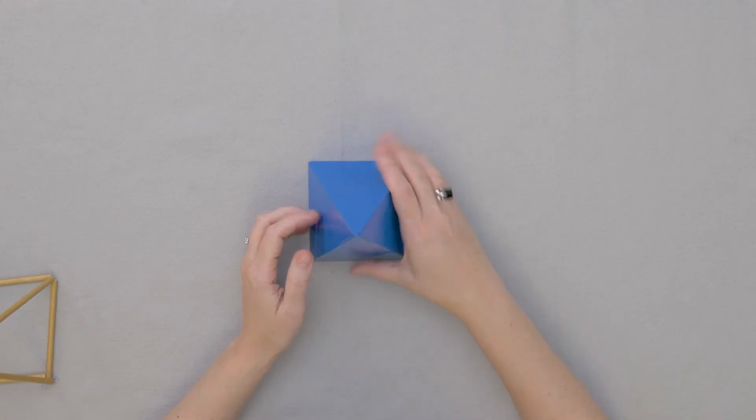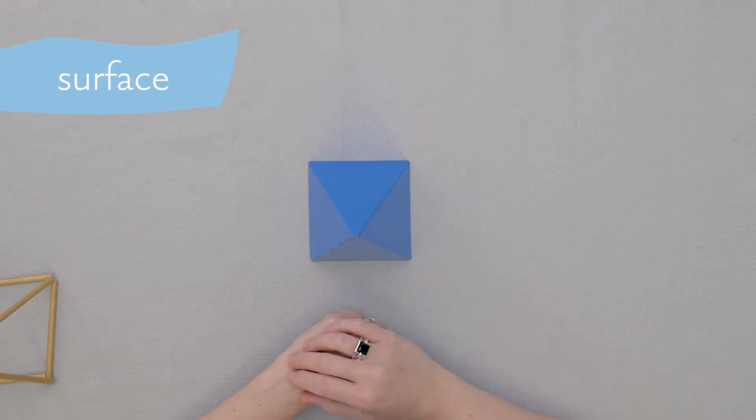Today we're going to talk about the parts of a solid. So this solid, all these parts on the outside that I can touch, are called the surface of the solid.